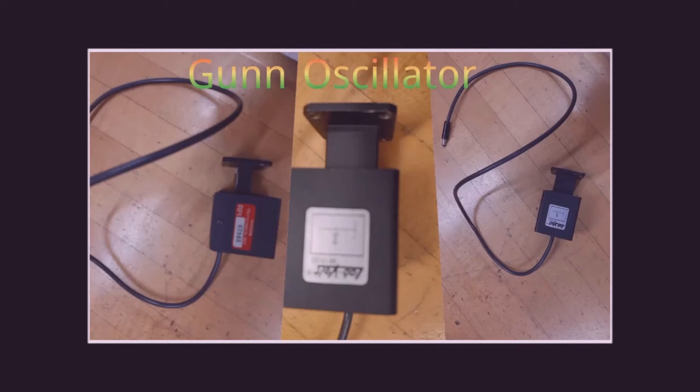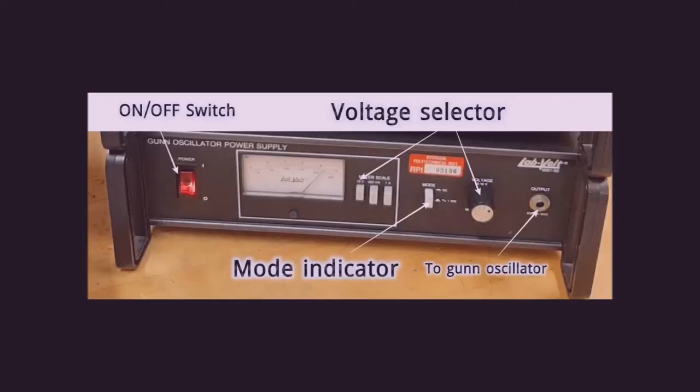This is the photograph of the gun oscillator — the cord of the device is connected with the output port of the power supply unit. The power supply unit contains an on/off switch, a dial to indicate the DC voltage supply to the gun oscillator, push-down switches, and a voltage regulation knob. We use this knob to apply 8.5 volts DC excitation to the gun oscillator.